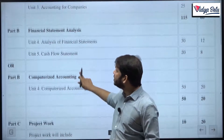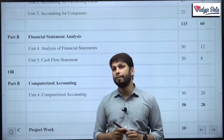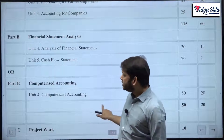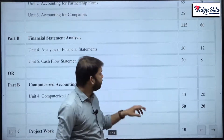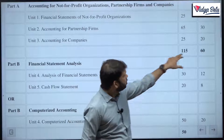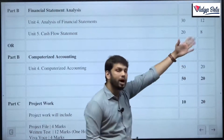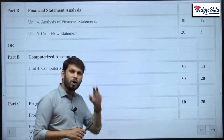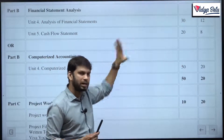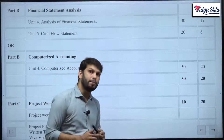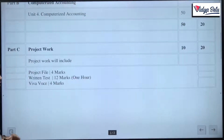We have discussed Part A and Part B. Part A and Part B consist of 60 marks plus 20 marks, making our 80-mark theory paper of 3 hours. The 20-mark Part C is our project work.